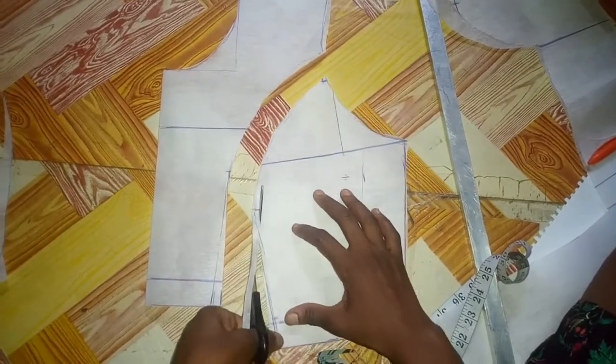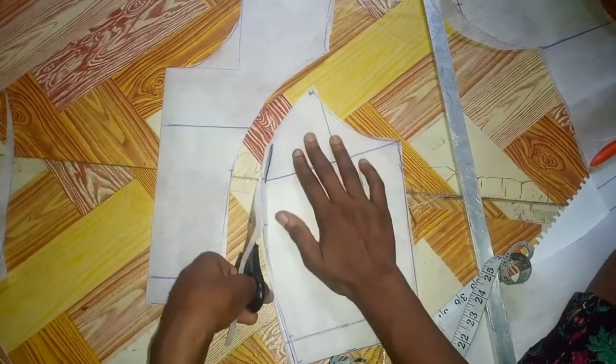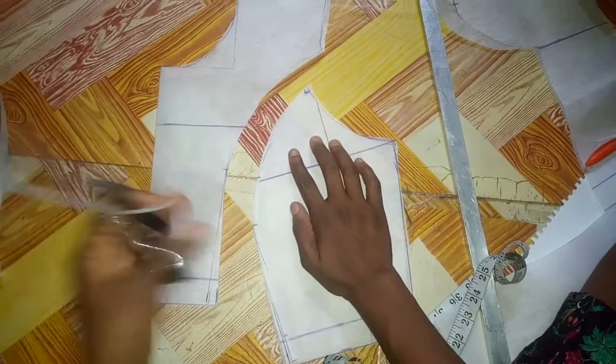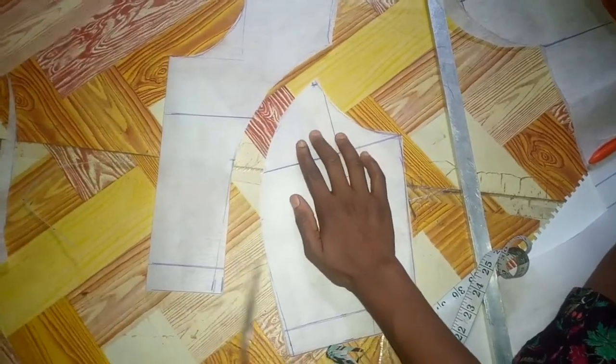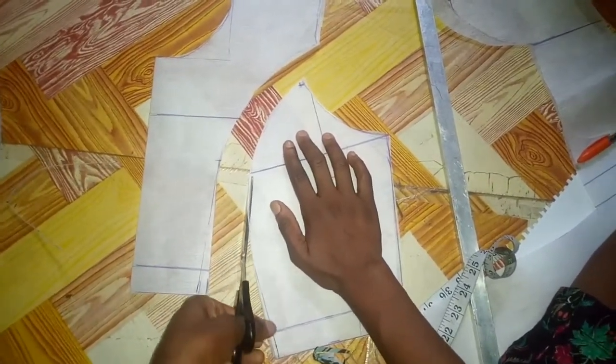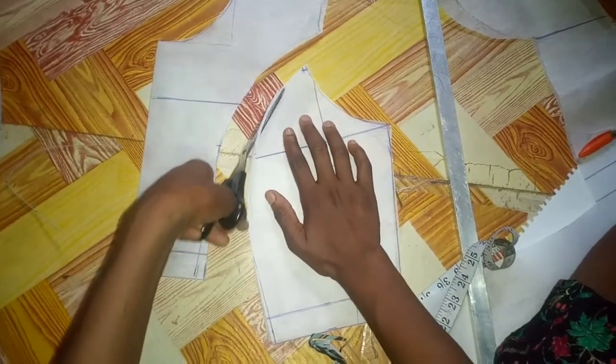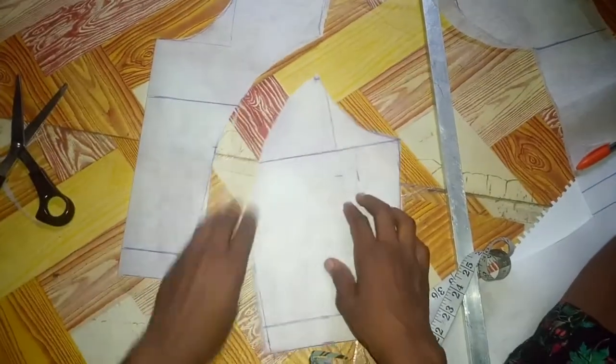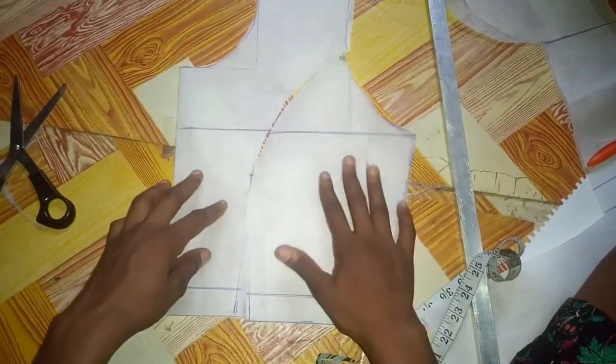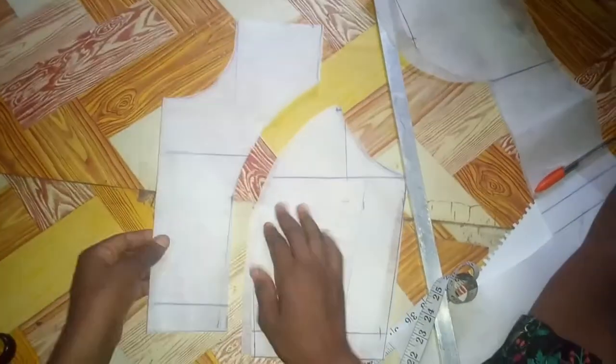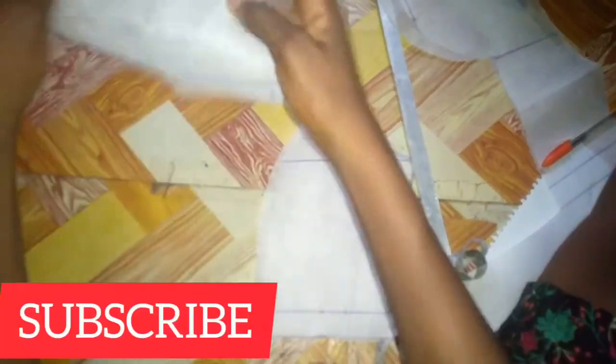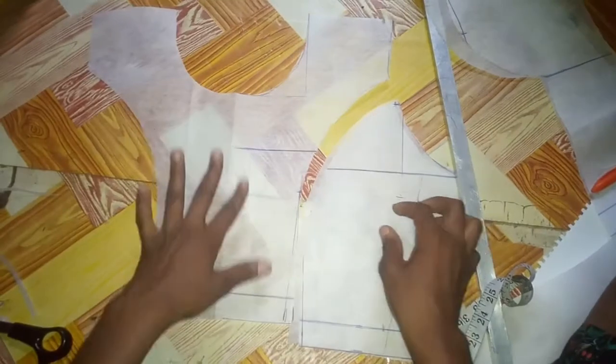So I'm just going to trim just like a quarter of an inch out. So this is how I cut my princess dart. This is a middle region.